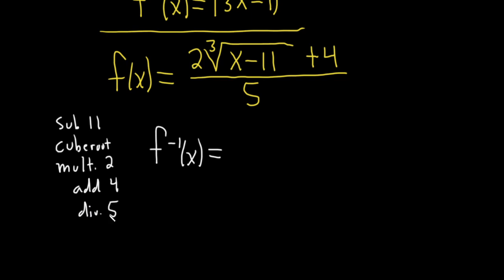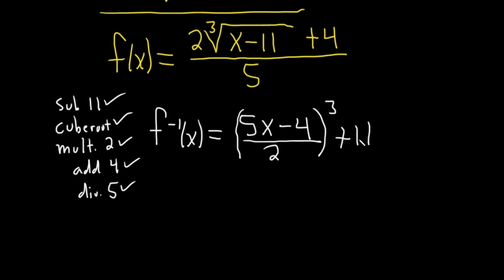So, this one will do everything in reverse order. So, instead of dividing by 5, we're going to multiply by 5. So, it'll be 5x, right, because 5 times x. So, that's done. And then instead of adding 4, we're going to subtract 4. So, minus 4. So, check. Instead of multiplying by 2, we're going to divide by 2. So, check. Instead of doing the cube root, we're going to cube everything. Check. And instead of subtracting 11, we're going to add 11. So, check. And that's pretty wicked, so let's go ahead and check.